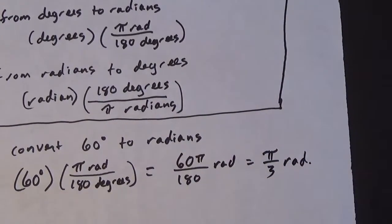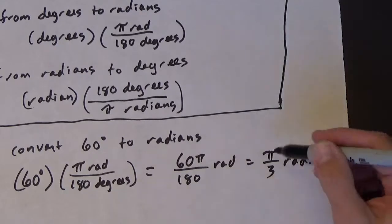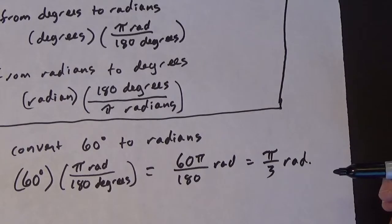Now one thing about radian measures and circular trigonometry is, if possible, we always want to have a radian measure in terms of pi. So we're actually not going to put that in a calculator. We're just going to keep it pi over 3 radians.